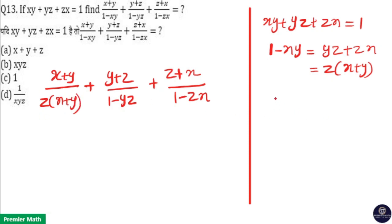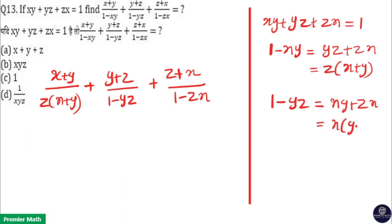From the first equation, 1 - yz = xy + zx. Here x is common, so x(y + z) = 1 - yz. Put that value in the denominator, so the second term becomes (y + z) / [x(y + z)].